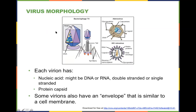So, virus morphology. Here's that T4 — it has a head, it has the DNA inside of it. It might be RNA; it could be double-stranded or single-stranded. It could have a protein capsid surrounding it. Each of these examples — bacteria, phage, adenovirus, HIV, retrovirus — has something protecting the genetic material so that when it finds what it needs to infect, it can transport that material into that living organism.